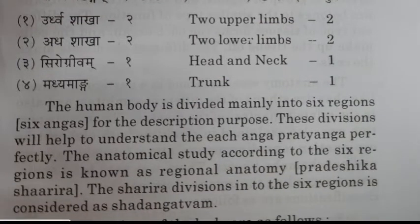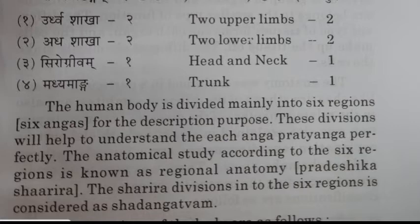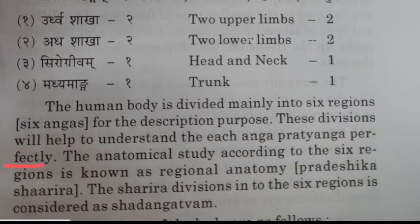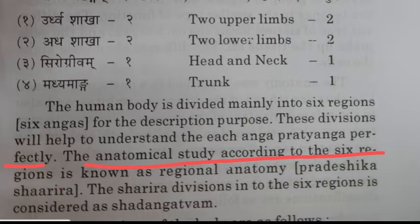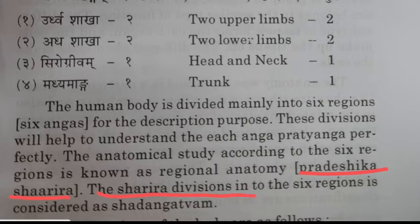In this, the human body is divided mainly into six regions — that is, six Angas — for description purposes. These divisions will help to understand each Anga and Pratyanga perfectly. The anatomic study according to the six regions is known as regional anatomy, called Pradeshika Shriira. The division of the body into six regions is considered as Shadangavatam.